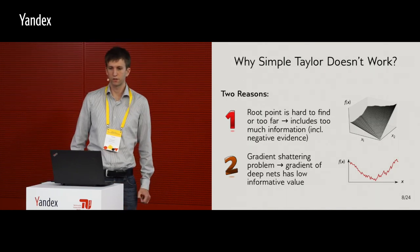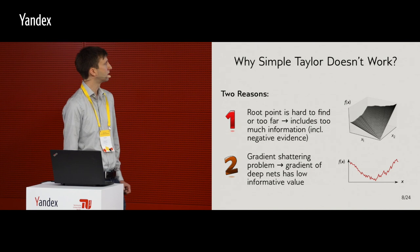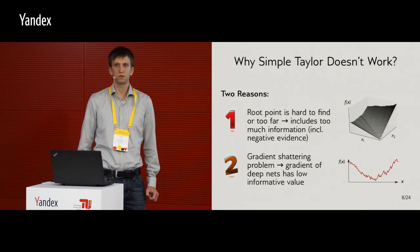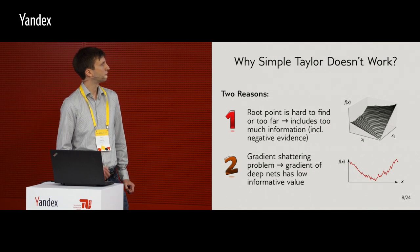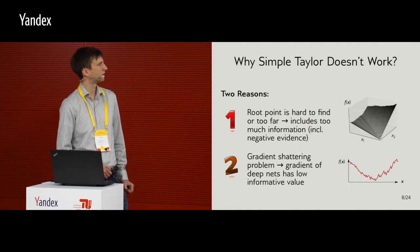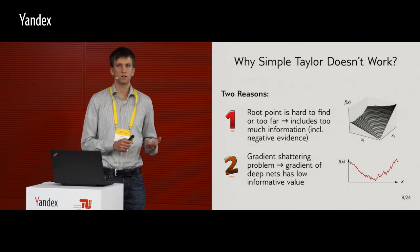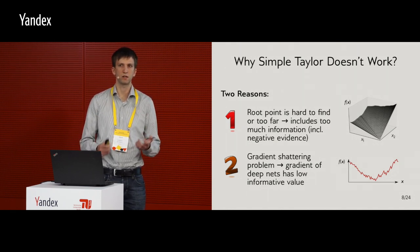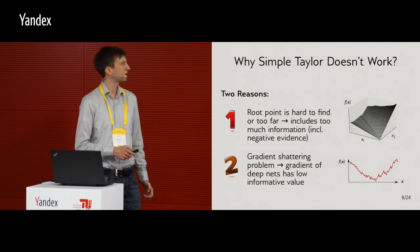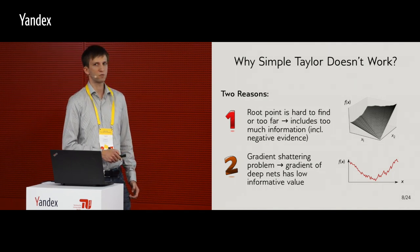So, why simple Taylor doesn't work? There are two main reasons. The first one is that the root point is hard to find, unless you have this special structure, but in that case, the root point is too far. So you would like the root point to be contextualizing the explanation, so essentially the same image or the same data without what causes evidence. In that case, you just compare it to something which is zero.